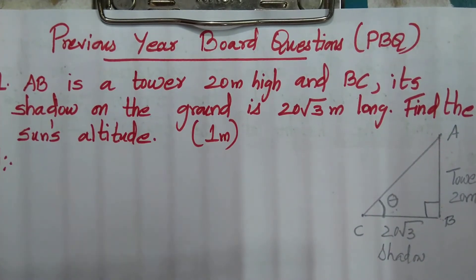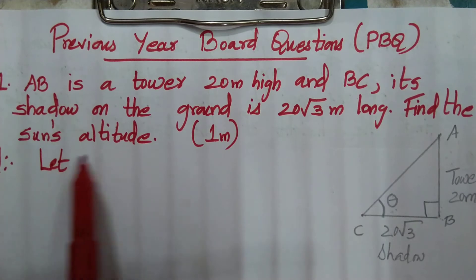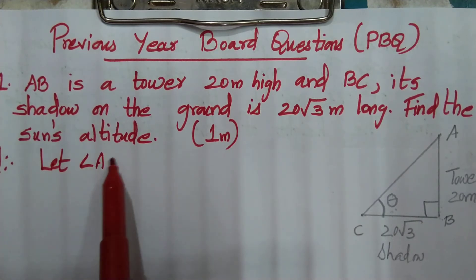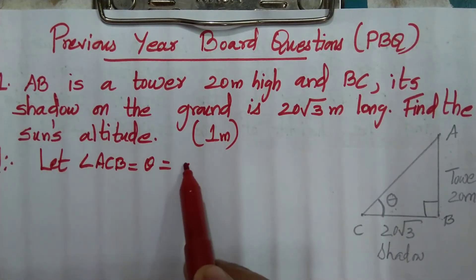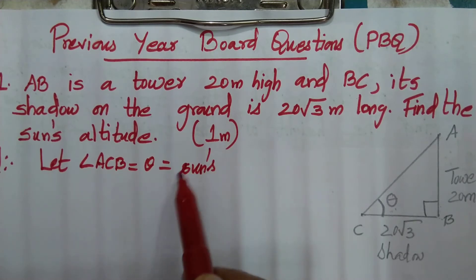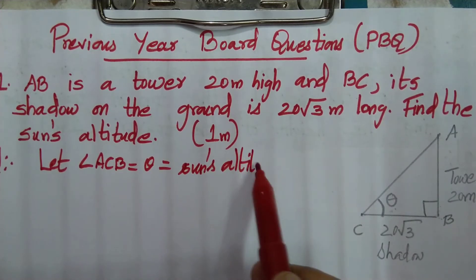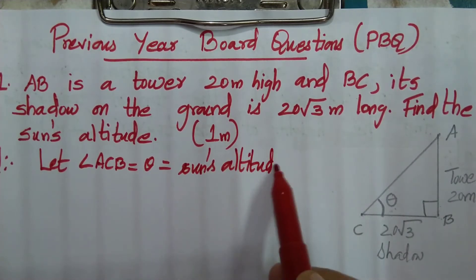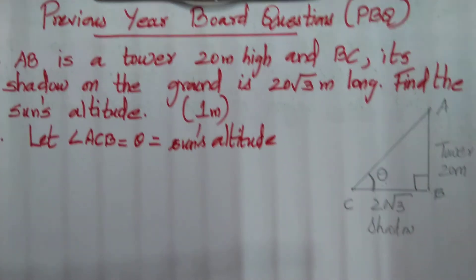Let angle ACB equal to theta, which equals the sun's altitude. The angle ACB is equal to theta — it is the sun's altitude.